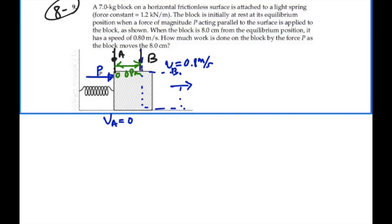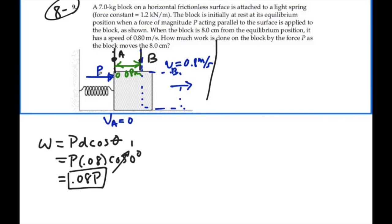Okay. Normally if we have a work type question, we might consider the force times the displacement or the dot product between the two. Work in this case would be equal to the force P times the distance D times the cosine of the angle between them. So that would be P times 0.08 cosine of zero degrees, which is one. It's 0.08 times P, but we don't know what P is. So we can't figure out the work that way, at least yet. So let's try a different method.